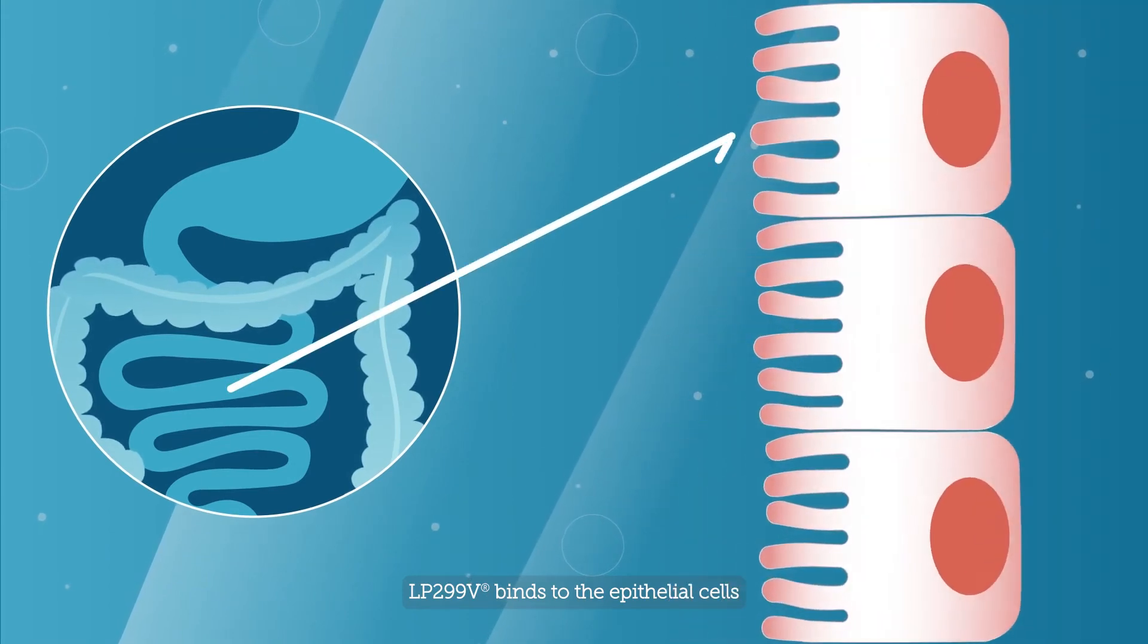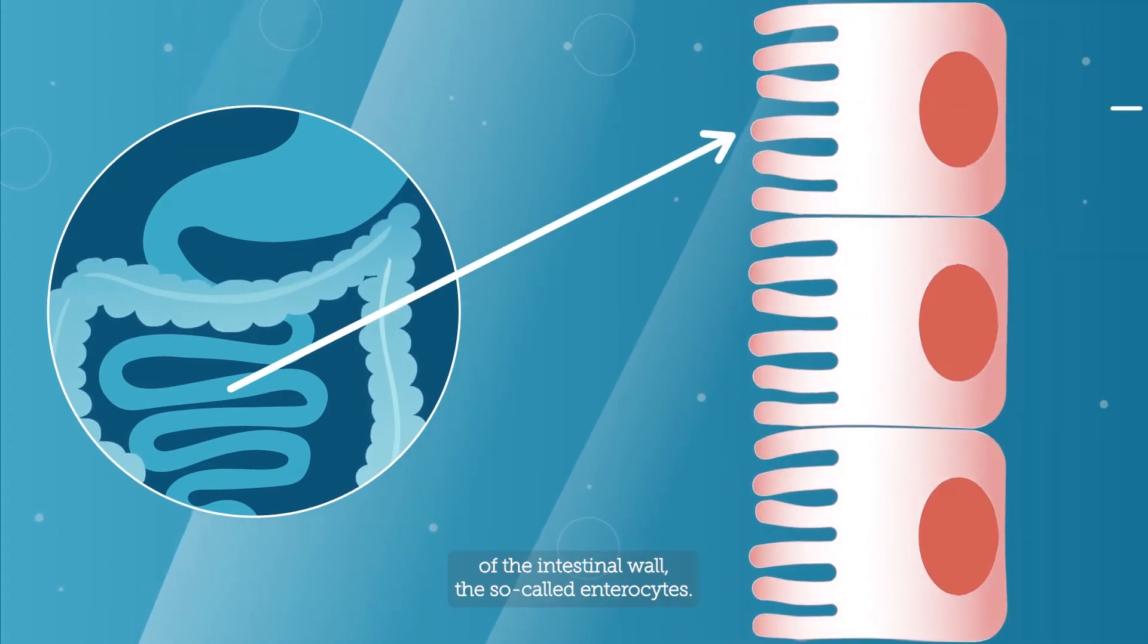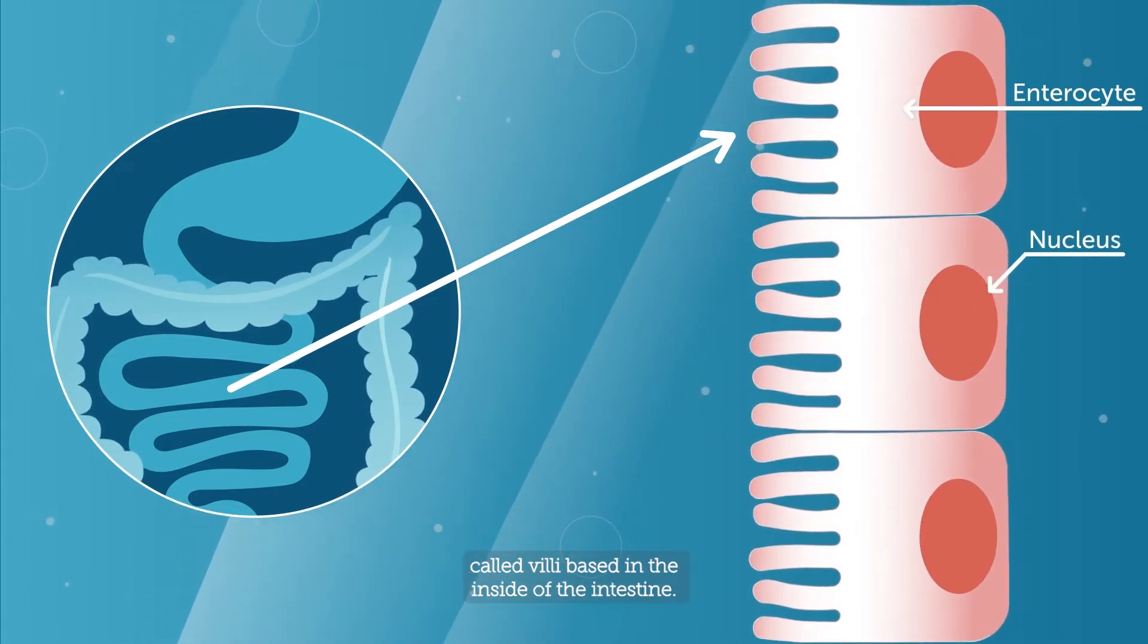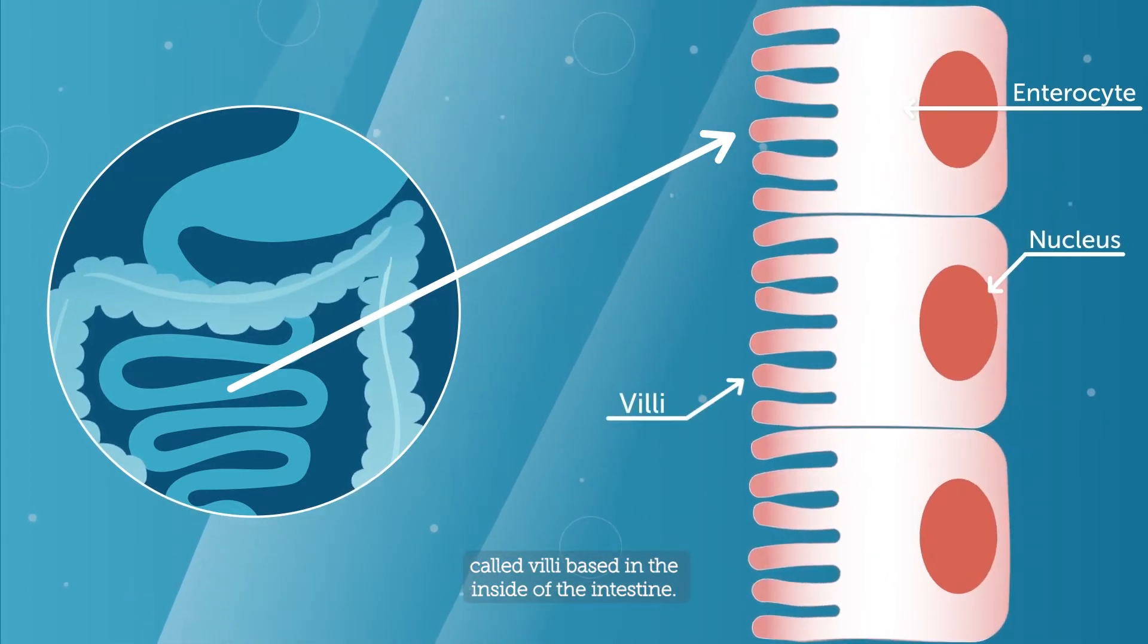LP299V binds to the epithelial cells of the intestinal wall, the so-called enterocytes. These are composed by a nucleus and finger-like structures called villi, based on the inside of the intestine.